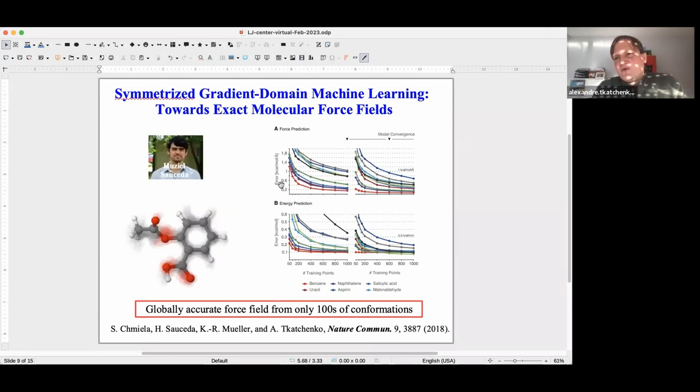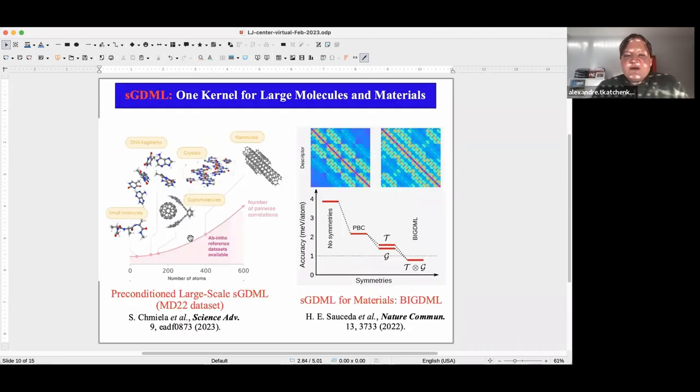Now, we have demonstrated for many different molecules that this is an extremely data efficient approach. Essentially, you can get chemical accuracy for just hundreds of conformations of a molecule. The largest molecule we've done back in 2018 is aspirin. This is not a very large molecule, but we can actually do this molecule. We can reproduce a force field at the coupled cluster level of theory, and we've demonstrated that we can run explicit path-integral molecular dynamics of such molecules and obtain agreement with experiment quite well.